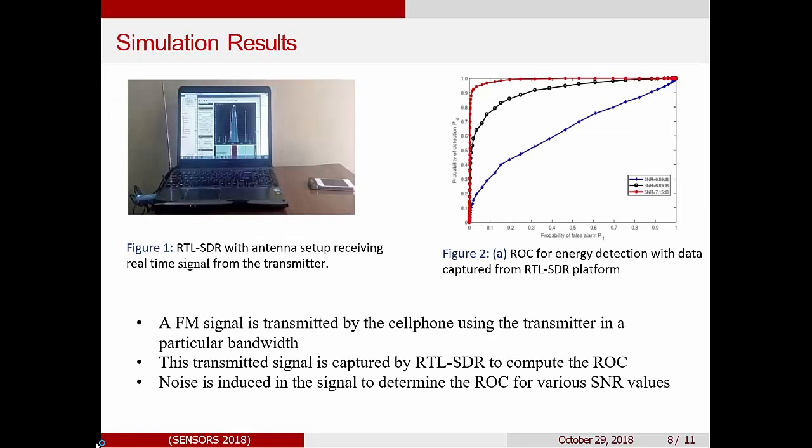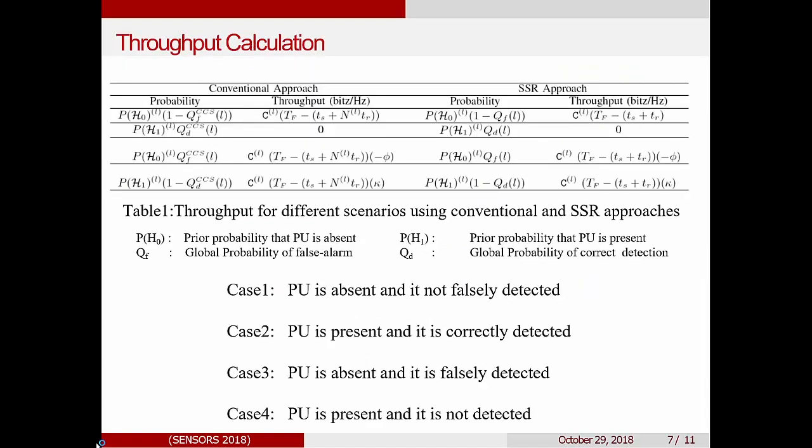Okay, so in the results. So firstly, we need to determine the ROC, which is receiver operating characteristics of the sensor. So it is PD versus PF. We determine this by first sending an FM signal through a phone. And then with the RTL-SDR, we captured it on our laptops. Then after computing it in MATLAB, we got the ROC. This was later used to calculate the PD and PF. And then the global probability of detection and the global probability of false detection, which is used in the calculation of throughput.